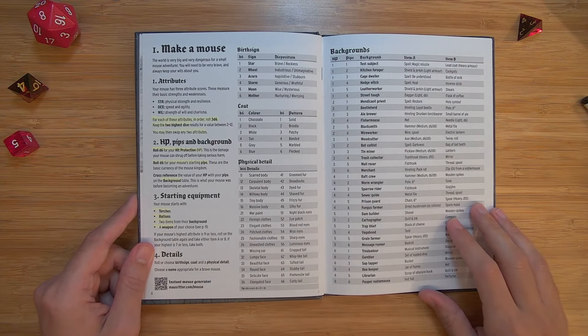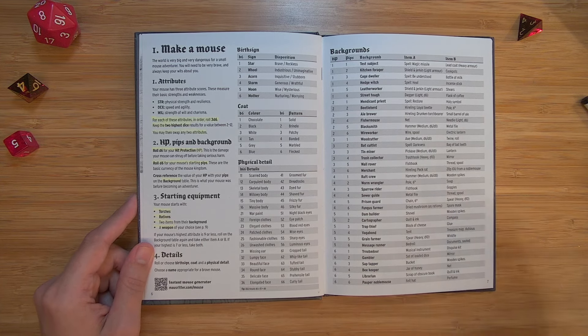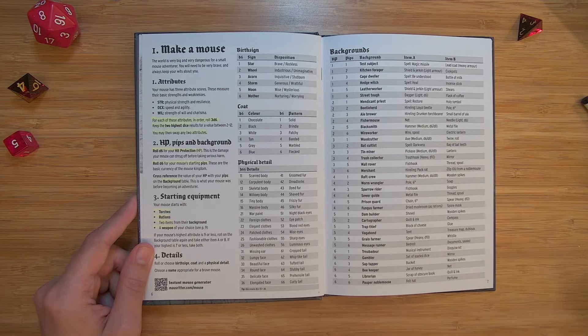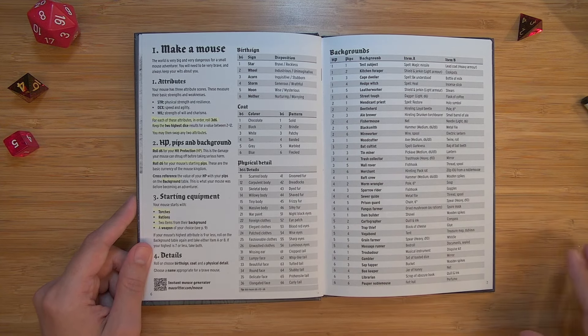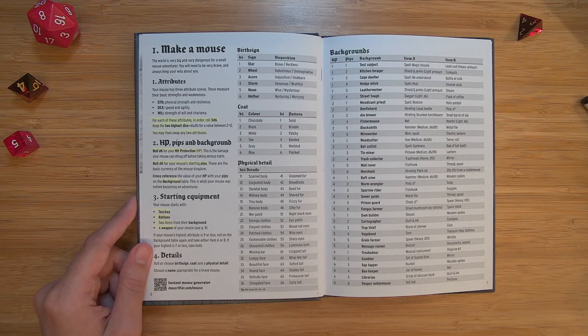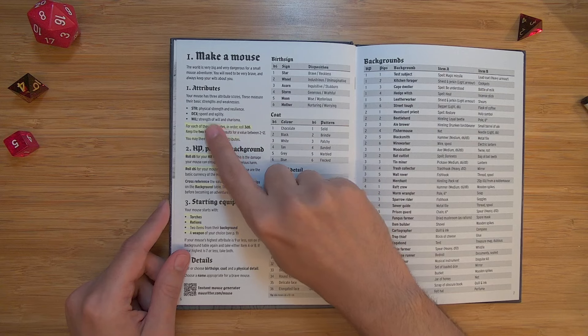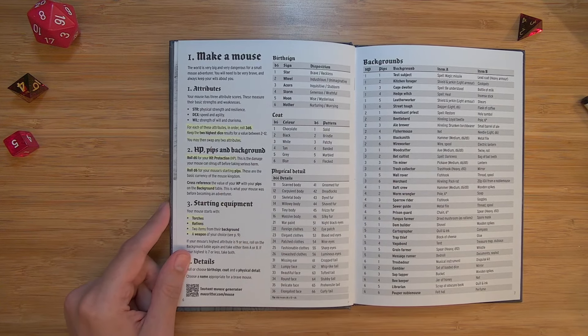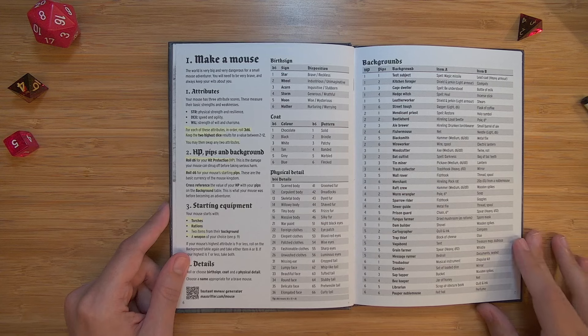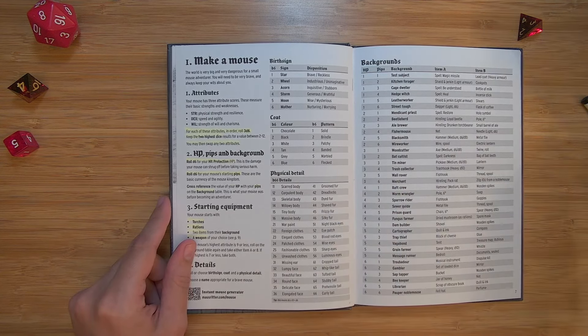So very different from board games like Monopoly. In Monopoly, the rules are the rules and you don't dare change the rules. But in TTRPGs, the rules are sort of suggestions and you can really take it and make it your own. Immediately on the second page, we open up to here's how you make a mouse. So no rules, no 'this is how you make an attack roll.' The first thing you do is you make a mouse. The world is very big and very dangerous for a small mouse adventurer. You will need to be very brave and always keep your wits about you. So in Mouse Ritter, there are only three attributes, which I really like.